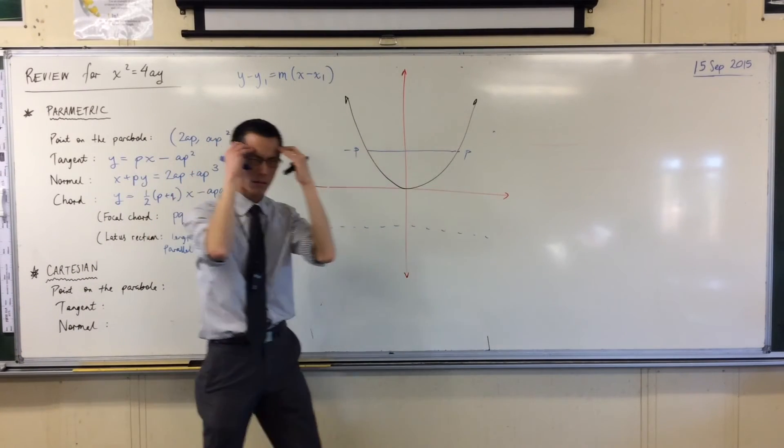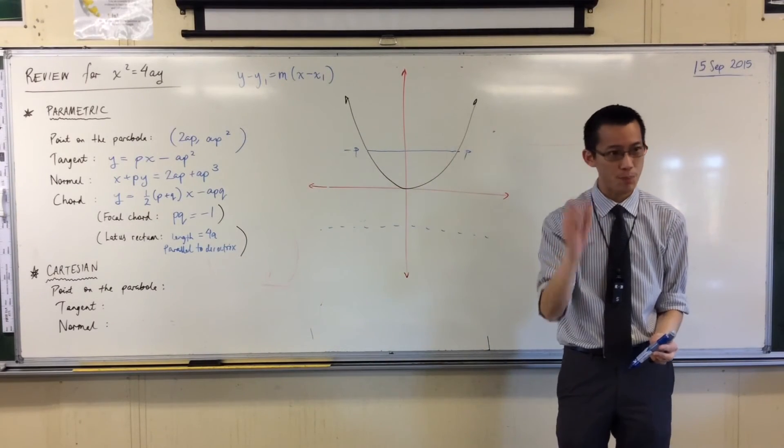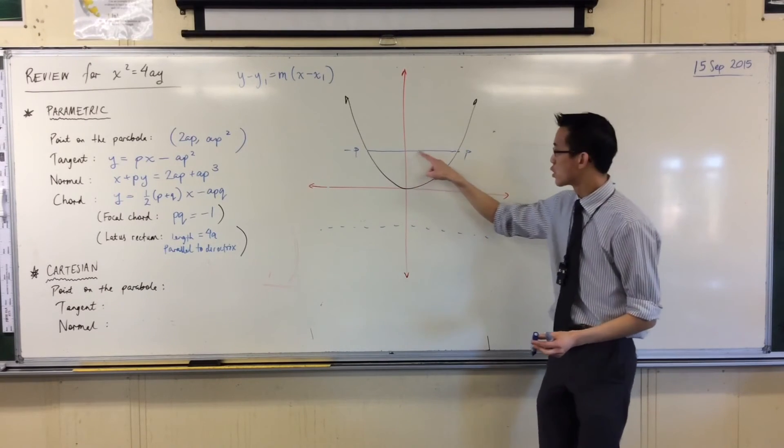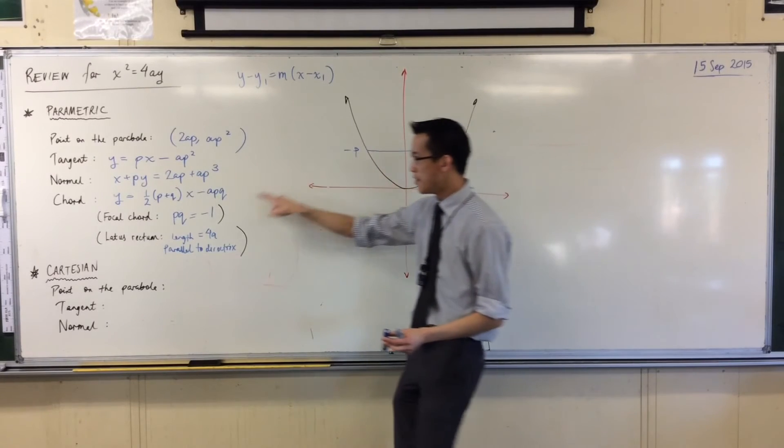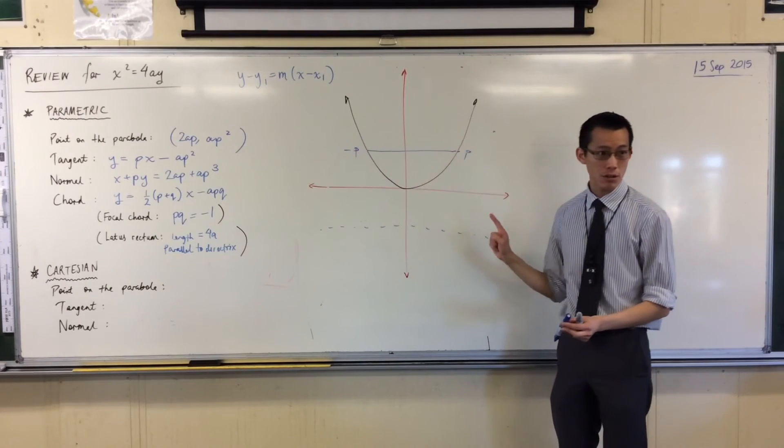But, hold on a second, we just said the latus rectum is a special focal chord, it has to pass through the focus. So if this is P and this is Q, like Q is negative P, then this should still be true. PQ should still be negative one, and this should be true.